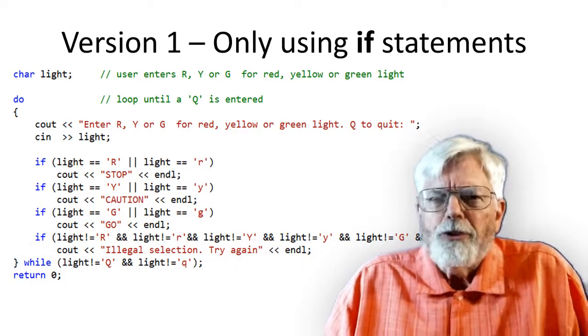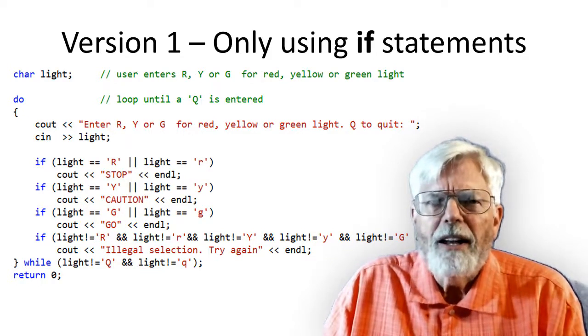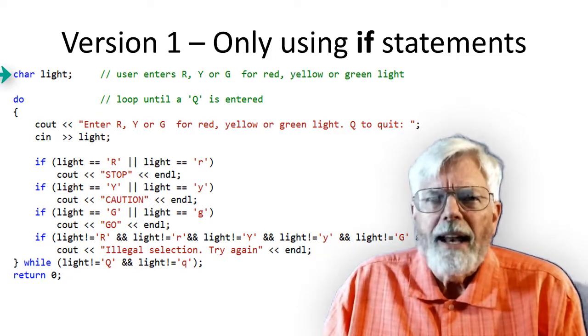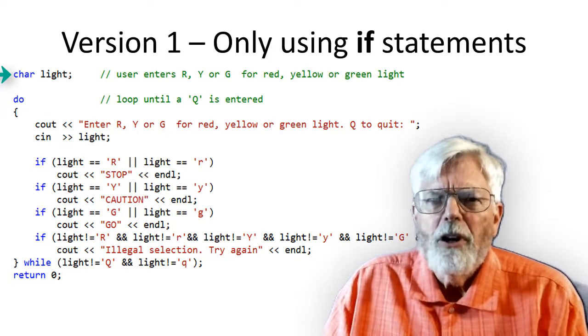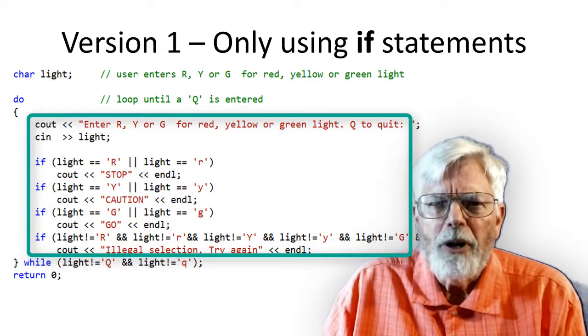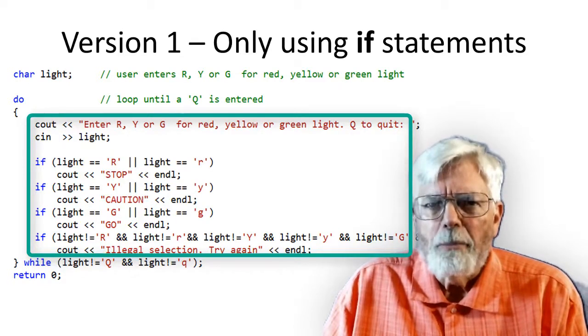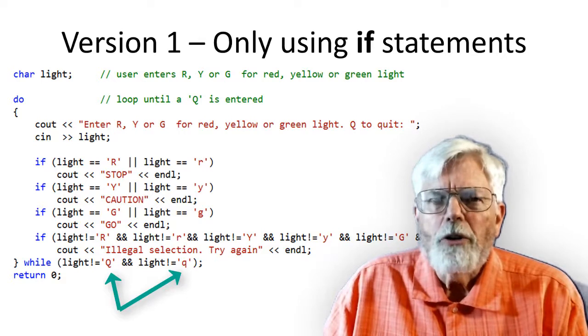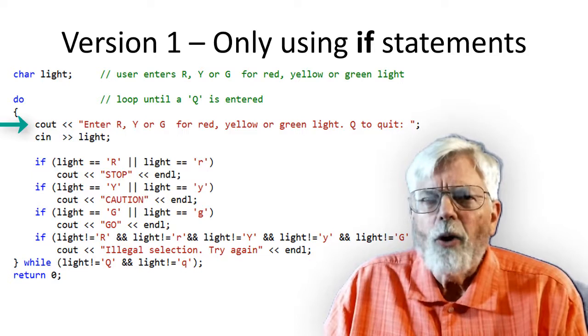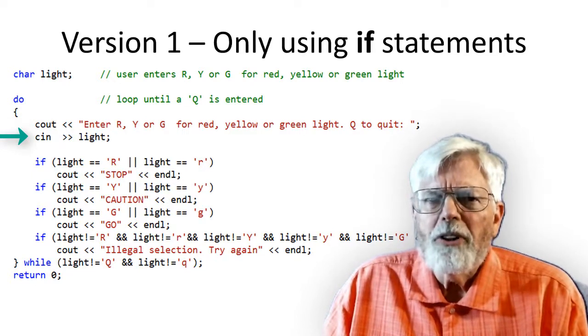Here is the C++ version of the code. The cout and cin statements need to be replaced with printf or scanf to make the program work in the C language. At the top, light is defined as a character variable. The do loop encloses all of the code that inputs a character and displays the output. That way, the program can keep running for multiple inputs. The Q character is used to quit the program. A prompt is displayed on the screen. Enter R, Y, or G. And a character is input from the keyboard and stored in the light variable.